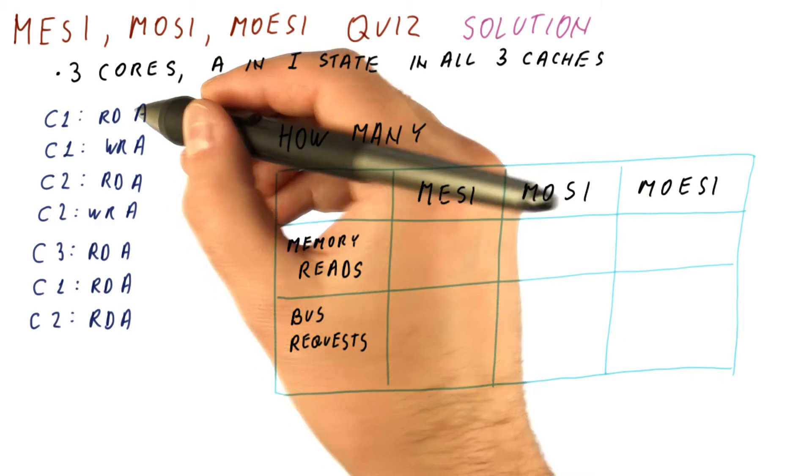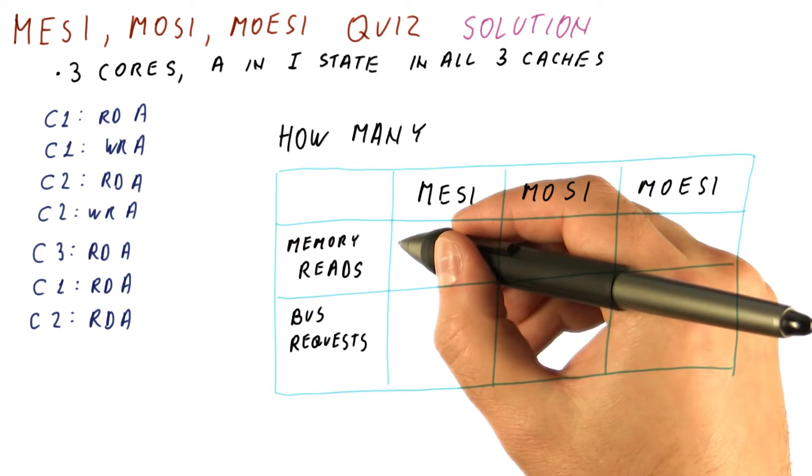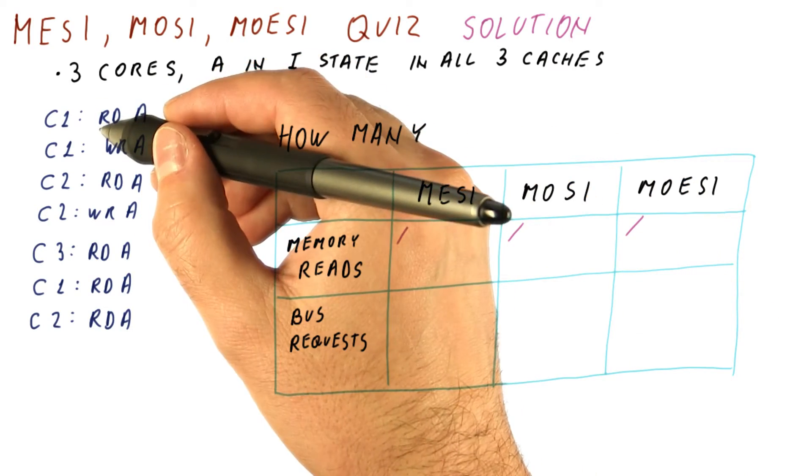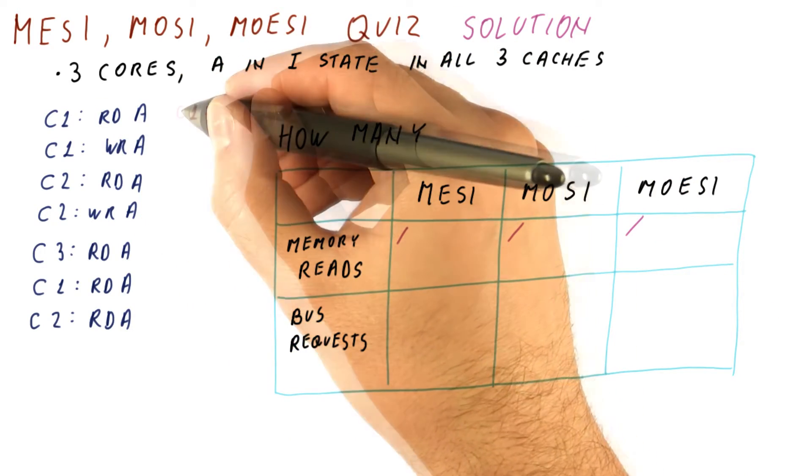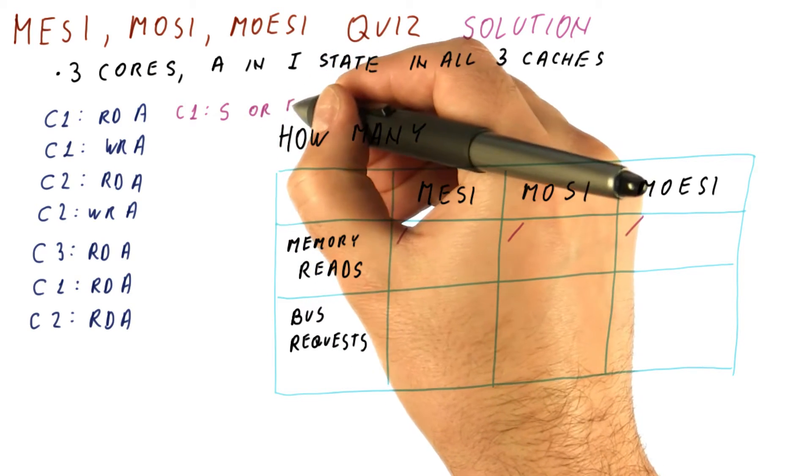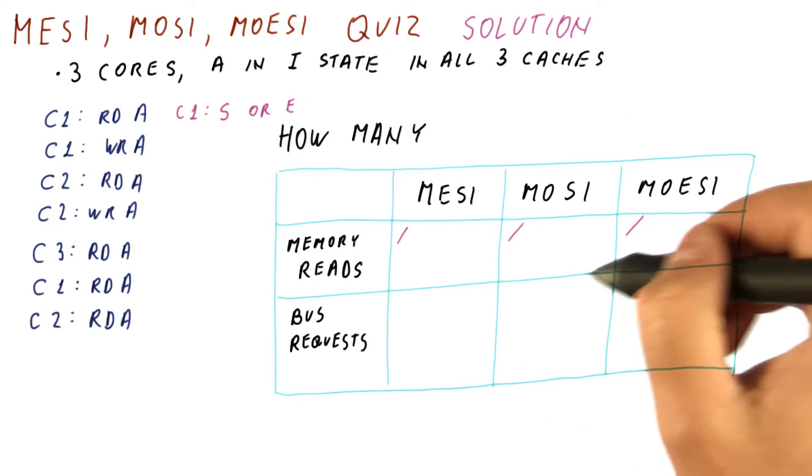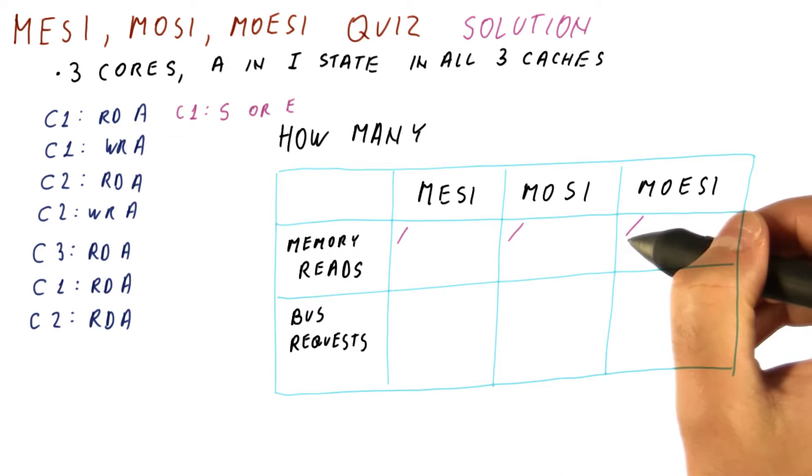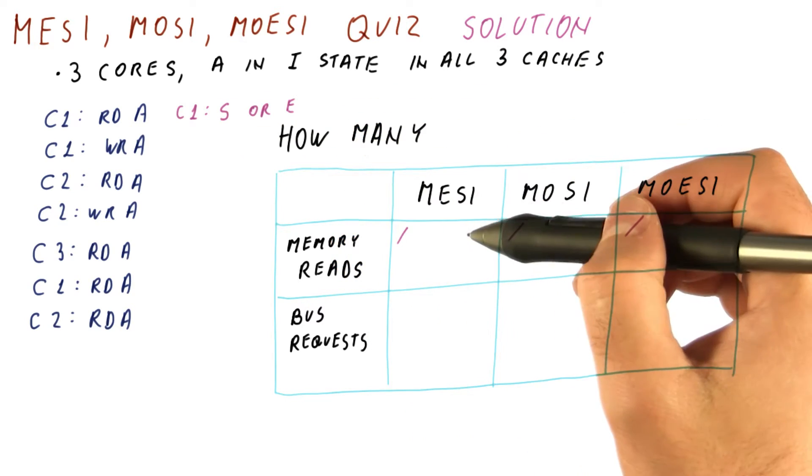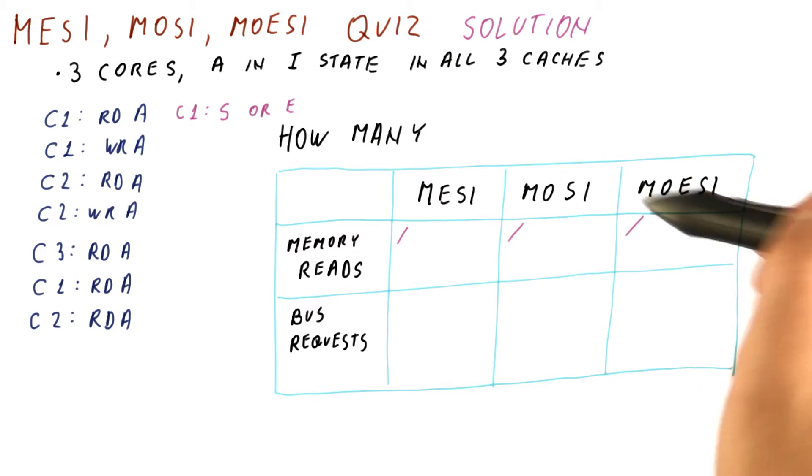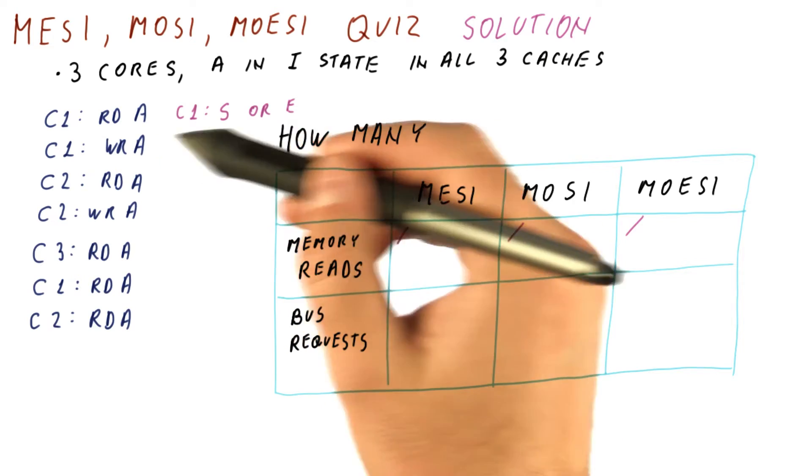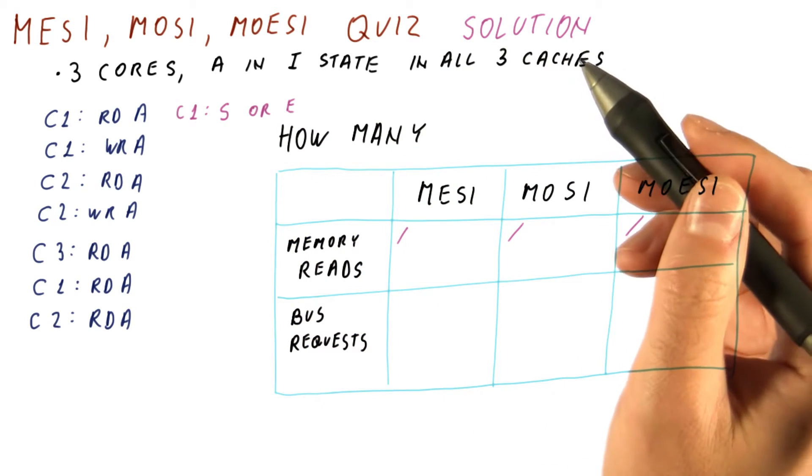When a read A occurs, we'll have a memory read in each of these protocols because this is a miss on core one. At that point, C1 has the block in the shared or exclusive state, depending on whether the protocol has a shared state or not. In MOSI, we will have shared state. In MESI and MOESI, we will have the exclusive state, because at this point, C1 is the only one who has this block at all.